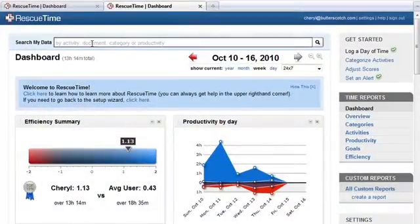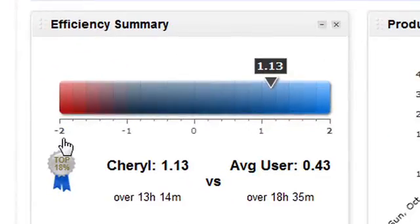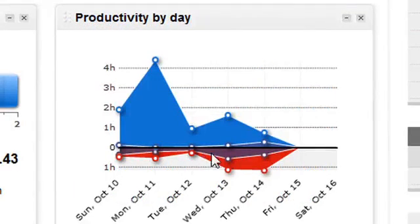Now, this is my personal dashboard. My efficient summary is actually pretty good. I'm at a top 18% range of efficiency, which is great. Here is a breakdown of all of my time.